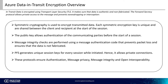The Forward Secrecy, or session, protocol allows private access to the message and prevents eavesdropping or interception. TLS uses symmetric cryptography to encrypt data. The keys in symmetric cryptography are unique and are shared at the start of the session. The PFS protocol also generates unique session keys that add another layer of security. The public key allows authentication of the communicating parties before the start of a session, and the session key ensures that the previous or next sessions are all independent and private. Each message carries a message authentication code with which a message integrity check is performed. It prevents packet loss and ensures that the data is not fabricated.